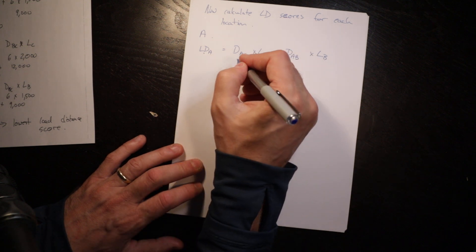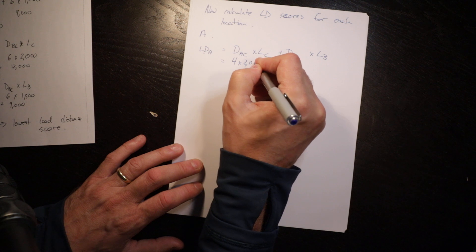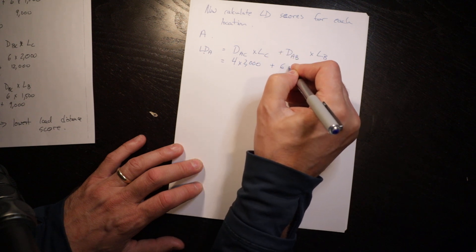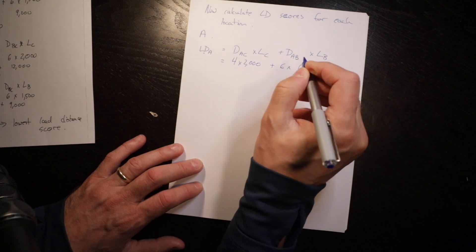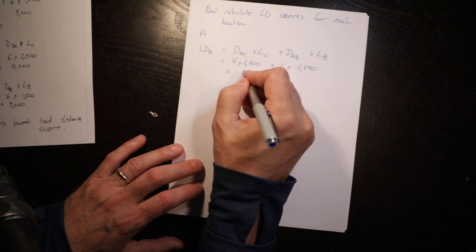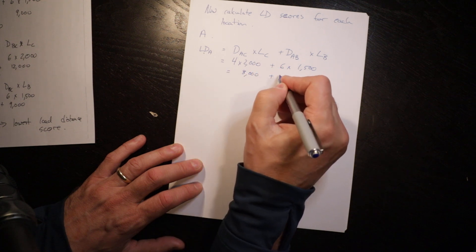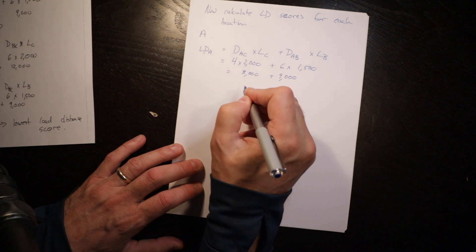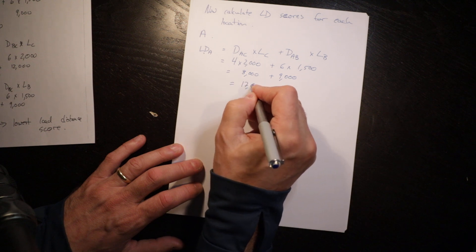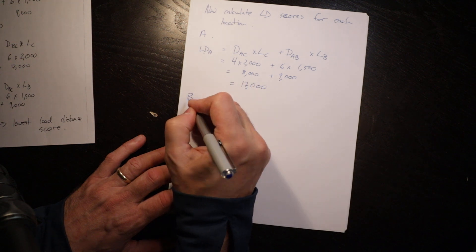That equals 4 times 2,000 plus 6 times 1,500, which equals 8,000 plus 9,000, equals 17,000. And we do the same for B.